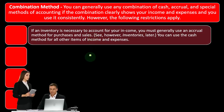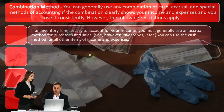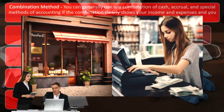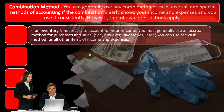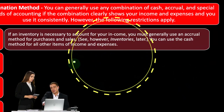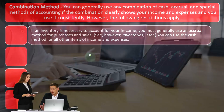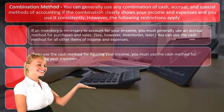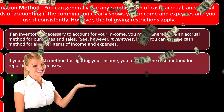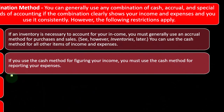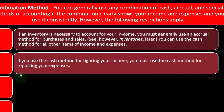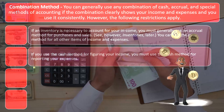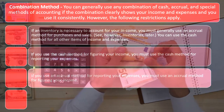You can use the cash method for all other items of income and expenses. That's a kind of hybrid method that can be practical for a lot of small businesses, because many expenses — like electronic transfers — can be recorded through bank feeds in QuickBooks, which is essentially a cash-based system. If you use the cash method for figuring your income, you must use the cash method for reporting your expenses. The idea is to match income and expenses in the same time period — that's the matching principle, which the accrual method is better at than the cash-based system.